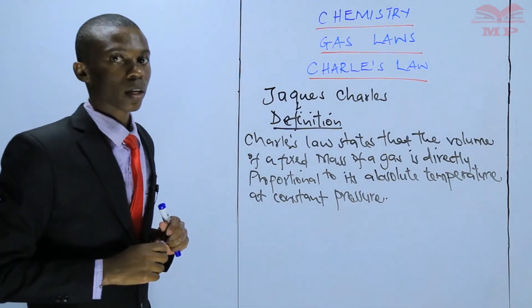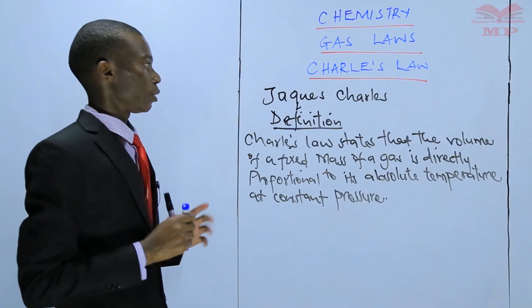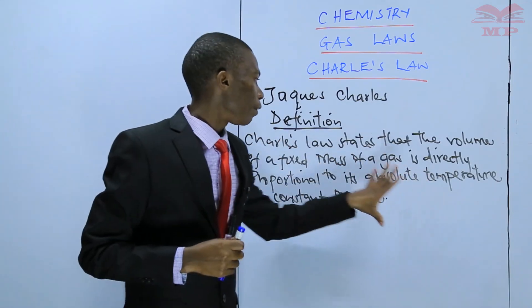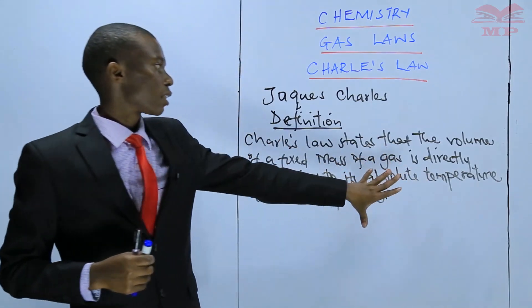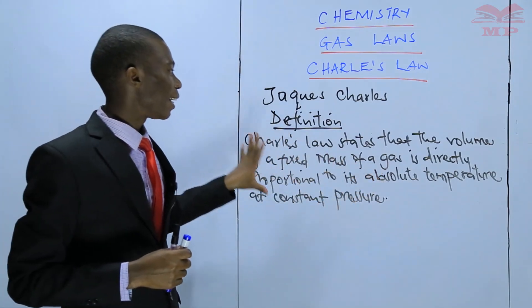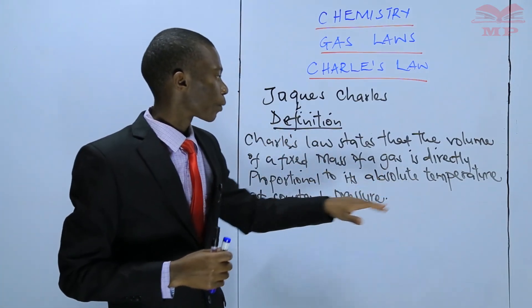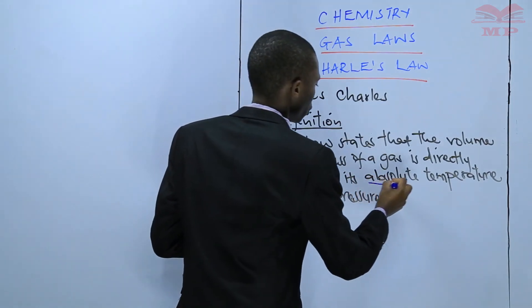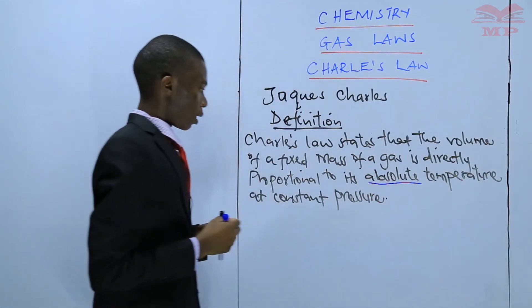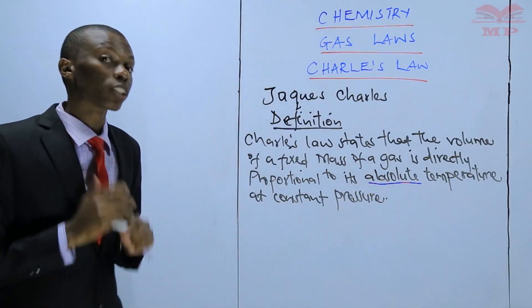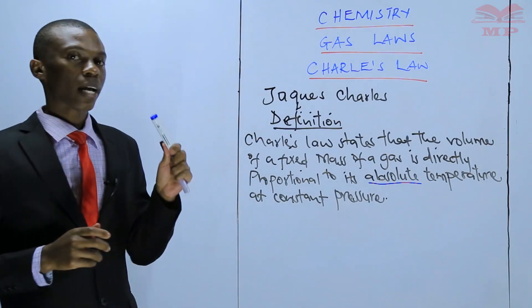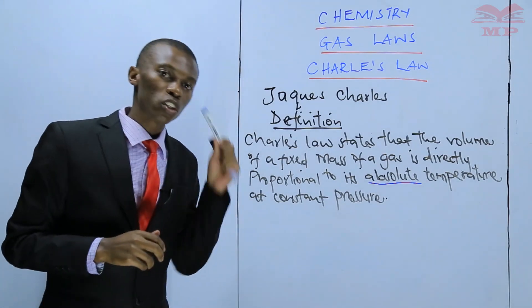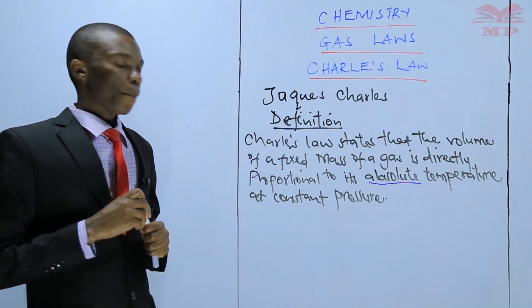If somebody asks you to state Charles' Law, you just say it states that the volume of a fixed mass of a gas is directly proportional to its absolute temperature. If you leave out 'absolute' then your statement is not right. So it should be absolute temperature at constant pressure.